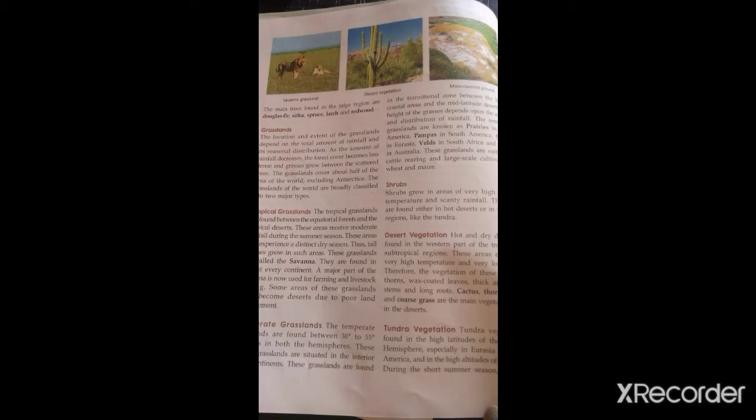Now we are going to discuss grasslands. There are two important factors that determine whether an area will have forest, grassland, or shrubs: the amount of rainfall and the temperature and climate. For grasslands, the temperature is high or moderate, and the rainfall is moderate or low. There is not enough moisture available for trees to grow.